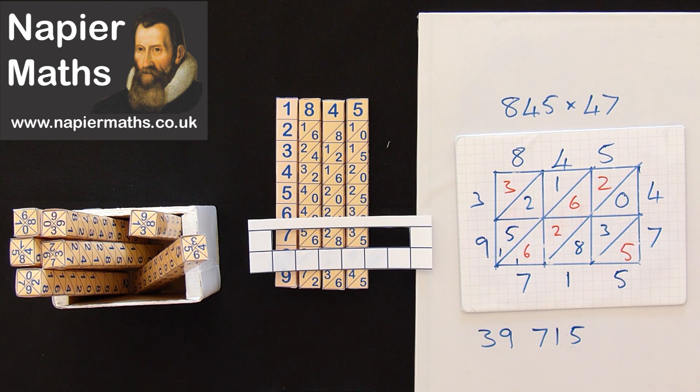That's how easy it is. And finally, in the last one we're going to multiply a really big one. We're going to do a 4 digit number by a 3 digit number.